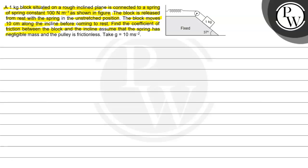Assume that the spring has negligible mass and the pulley is frictionless. Take g equals 10 meter per second squared.